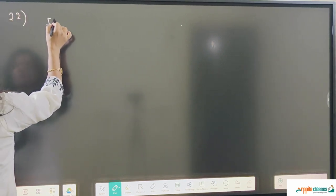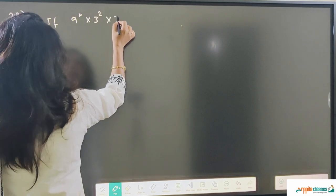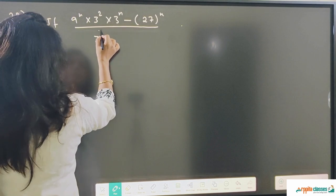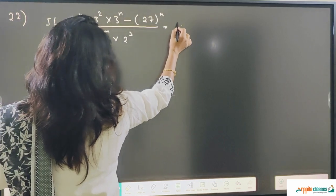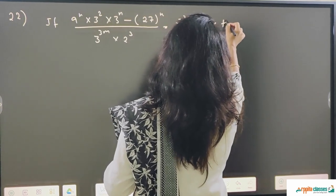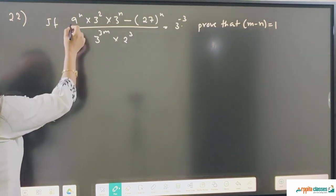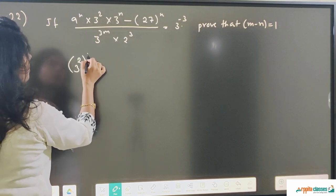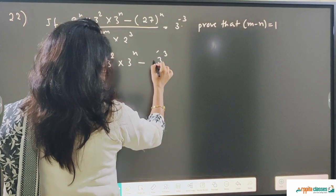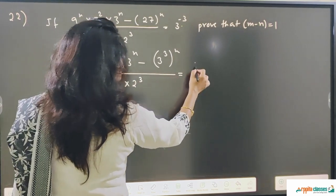Question number 22: 9 to the power n into 3 squared into 3 to the power n minus 27 to the power n, divided by 3 to the power 3m into 2 cubed, equals 3 to the power minus 3. Prove that m minus n equals 1. Let us take the left hand side. 9 to the power n I will write as 3 squared whole to the power n, 3 squared, 3 to the power n minus 27 is 3 to the power 3 whole to the power n, divided by 3 to the power 3m into 2 cubed, equal to 1 upon 3 cubed.